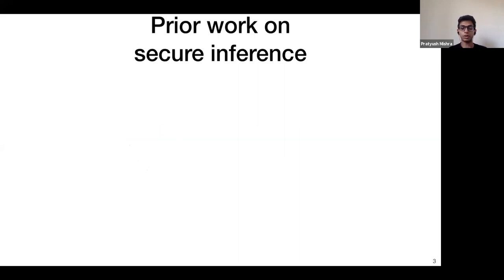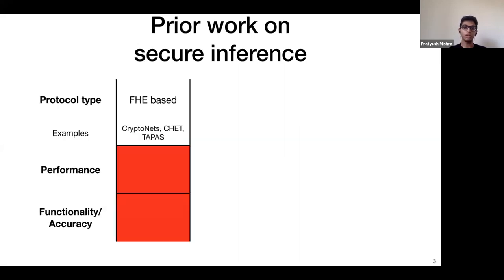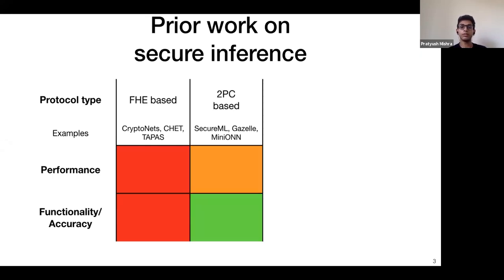Let's look at some prior work on secure inference. The earliest class of protocols are based on fully homomorphic encryption (FHE). These protocols homomorphically evaluate the neural network over the client's encrypted input, but because FHE is such a heavyweight tool, they achieve performance quite far from native execution and can't support a wide class of neural networks since only some operations are efficient in FHE.